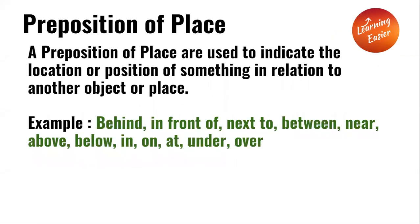Preposition of place. A preposition of place is used to indicate the location or position of something in relation to another object or place. Examples include: behind, in front of, next to, between, near, above, below, in, on, at, under, and over.